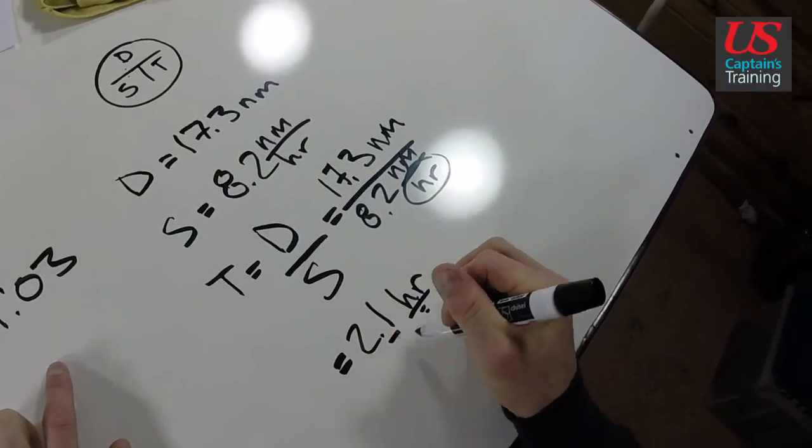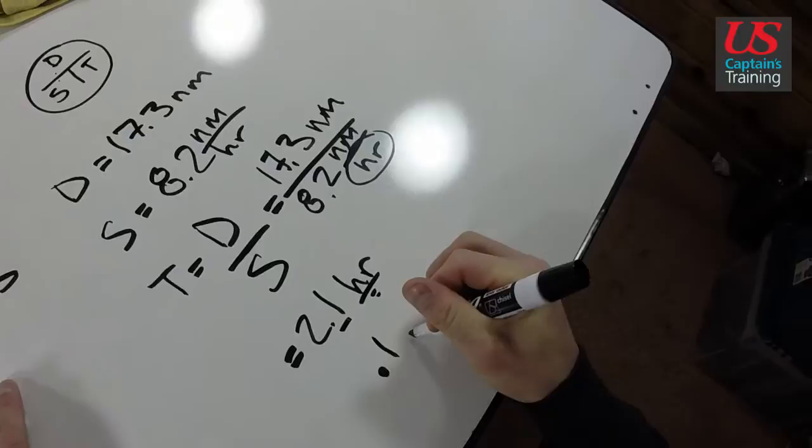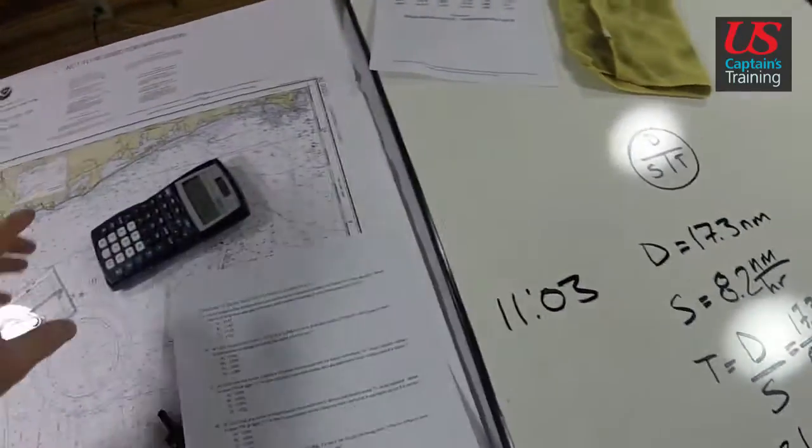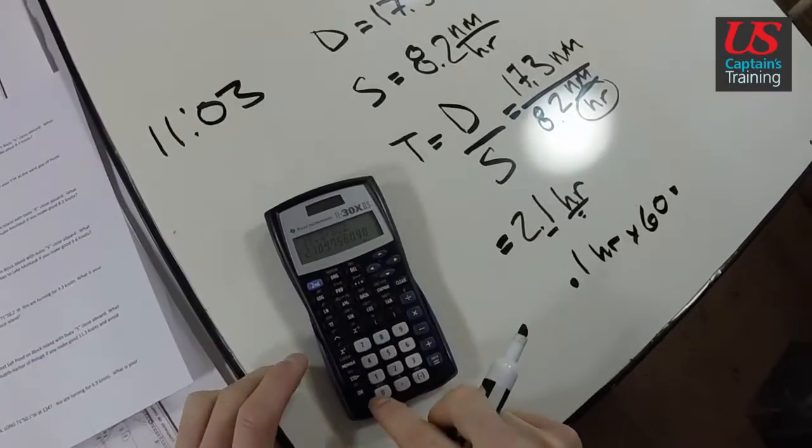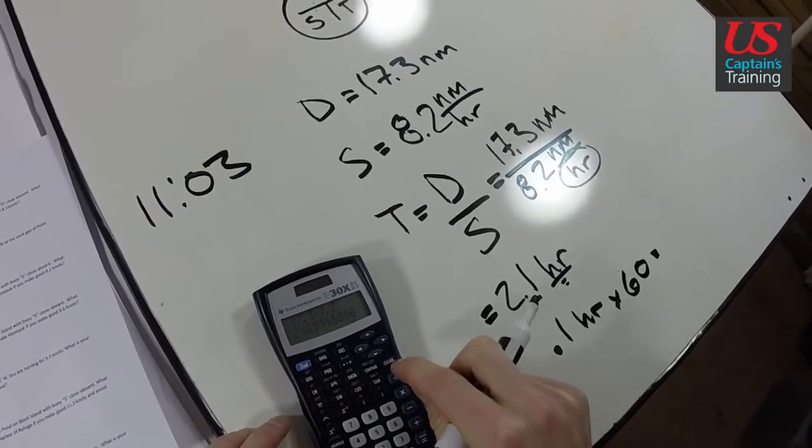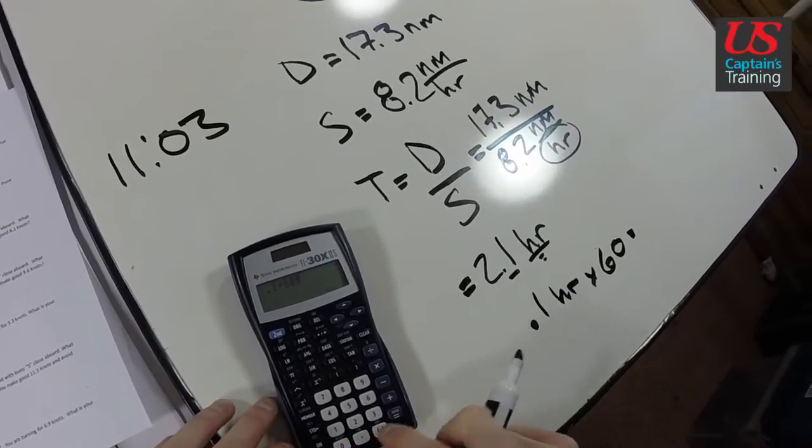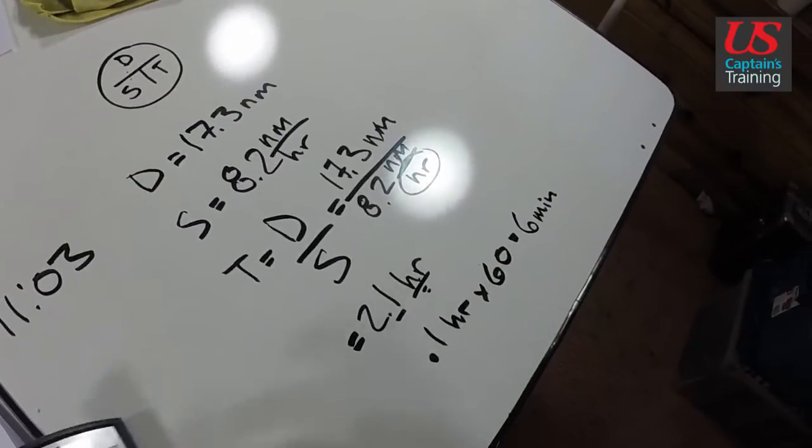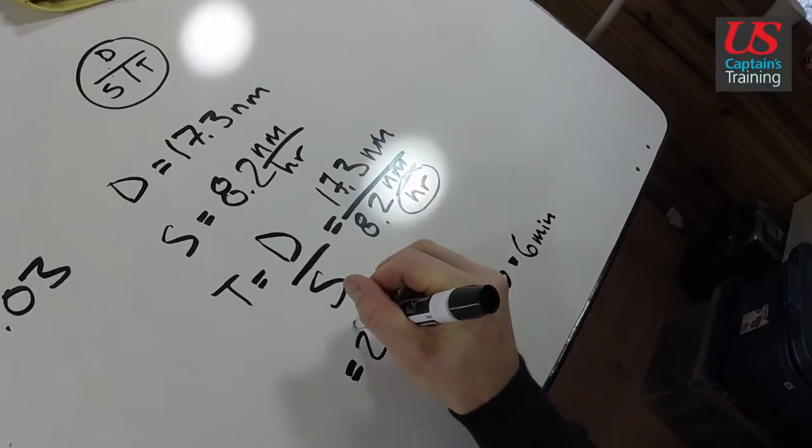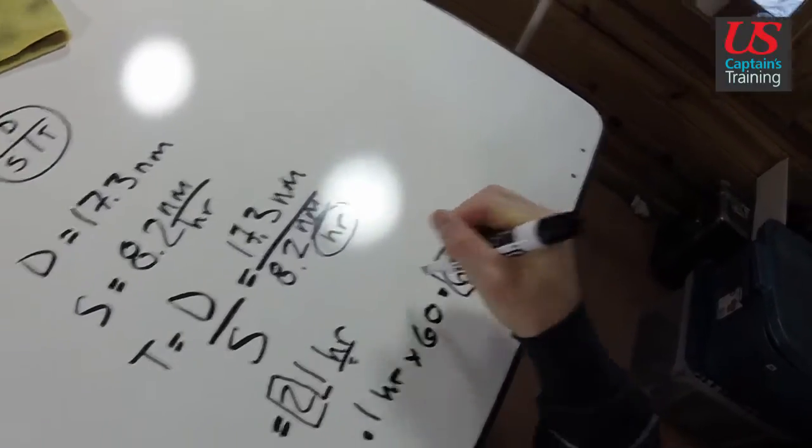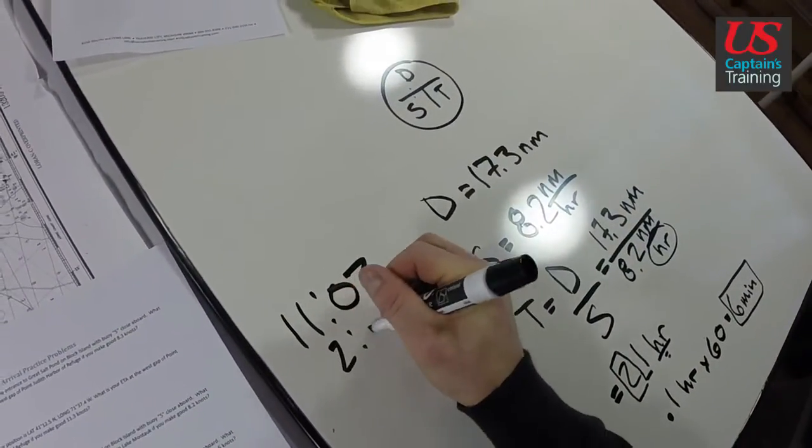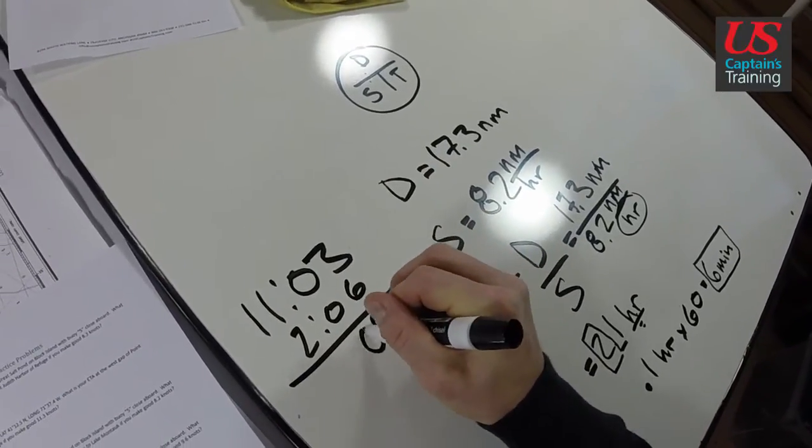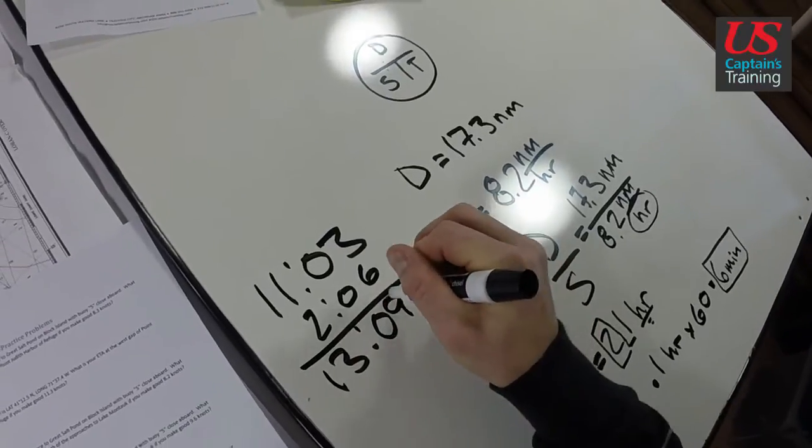We need to convert this 0.1 hours to minutes. Clear, 0.1 times 60 equals six, six minutes. So now we have two hours and six minutes. That's six, seven, eight, nine, thirteen - 13:09.